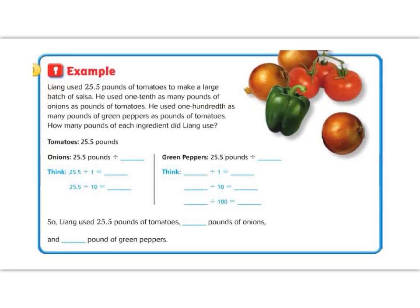One last example, fifth graders. This one says, Lang used 25.5 pounds of tomatoes to make a large batch of salsa. He used one-tenth as many pounds of onions as he did tomatoes. He used one-one-hundredth as many green peppers as pounds of tomatoes. How many pounds of each ingredient did he use?